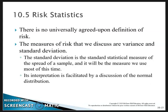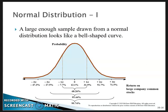This is a normal distribution. We're looking at the return for large company stocks. The mean was 12.1% and the standard deviation was 19.8%.